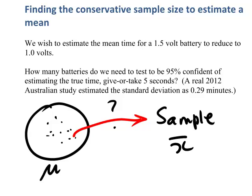Now, we'd expect that larger samples would provide better information and give us a better estimate of this population mean. But again, how large do we need that sample to be?